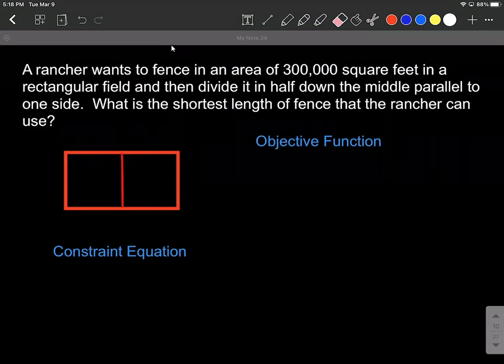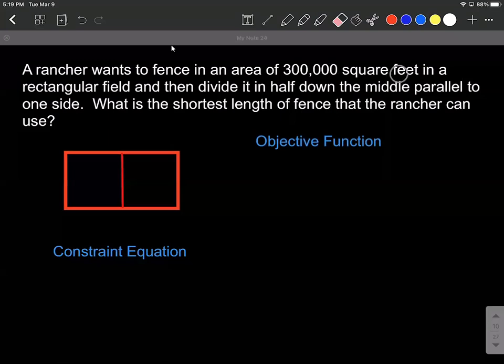Next up, what we want to do is set up one function, an objective function. That's whatever we're trying to maximize or minimize. And then we want to set up a constraint equation. That constraint equation is going to be based on some constraint, some number that's been given to us in the word problem. So in this case, our area is being constrained.